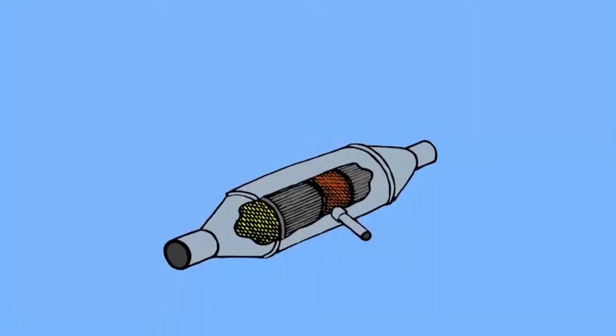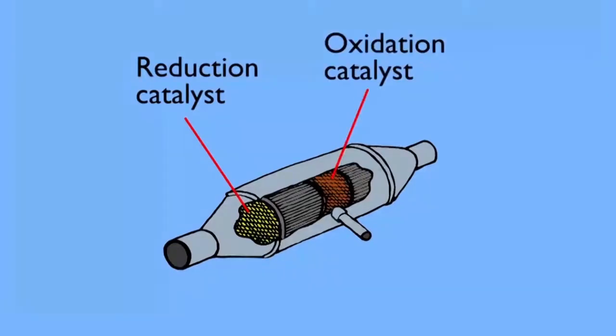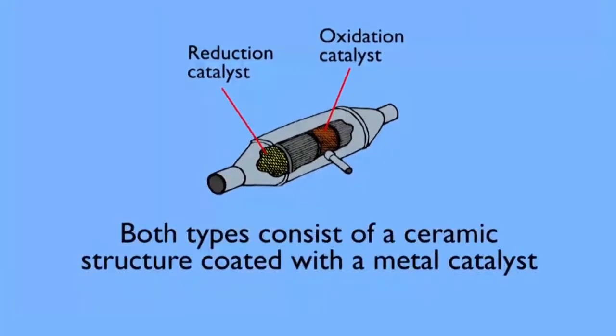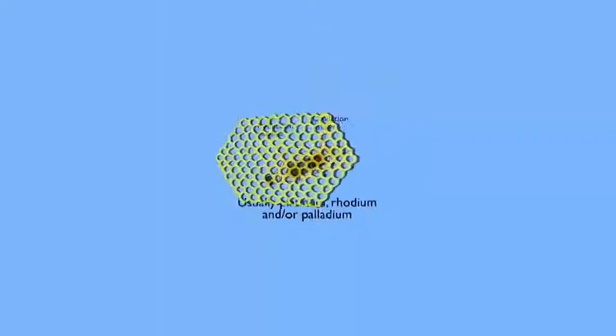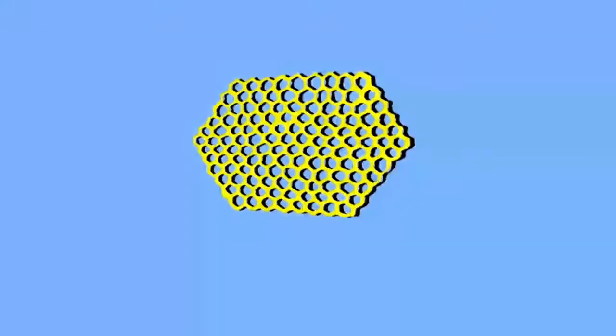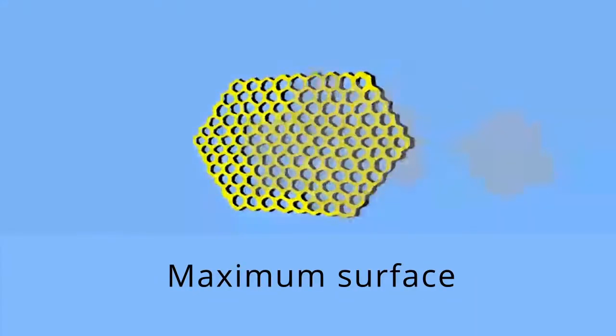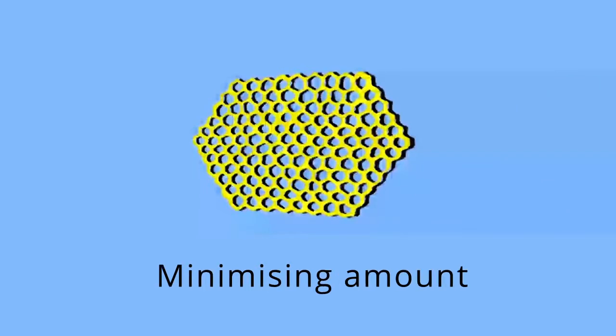A reduction catalyst and an oxidation catalyst both consist of a ceramic structure coated with a metal catalyst, usually platinum, rhodium, and/or palladium. These metals are formed in a honeycomb arrangement. The honeycomb structure exposes the maximum surface of catalyst to the exhaust stream while minimizing the amount of catalyst required, as these metal catalysts are extremely expensive.